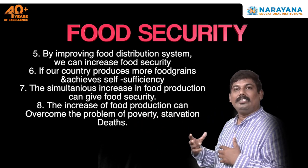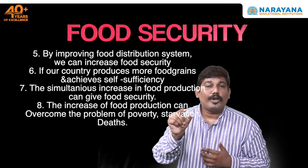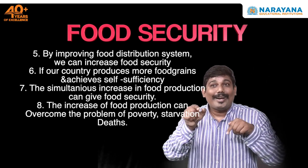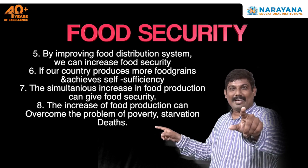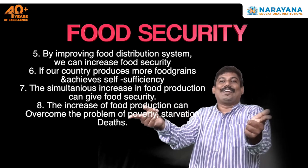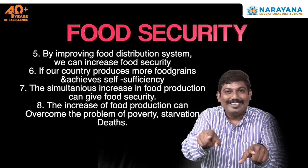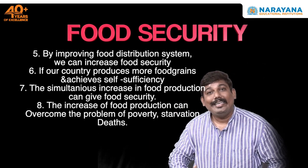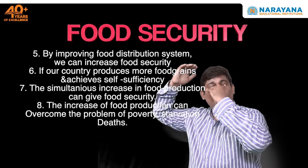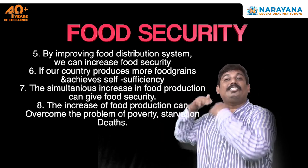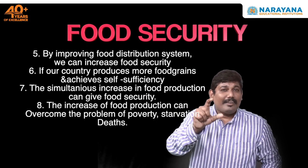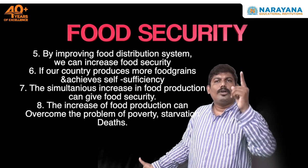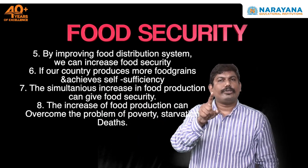Finally, simultaneously increasing food production can give food security and overcome the problems of poverty. If you increase food production, we can provide food security, overcome starvation deaths, and also develop as a nation. As we move from an undeveloped to a developing and eventually developed nation, if food and basic needs are available to people, we can achieve that. These are the priority questions on food security that you need to go through for the exam.